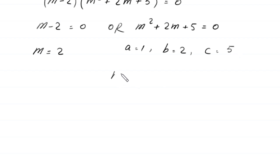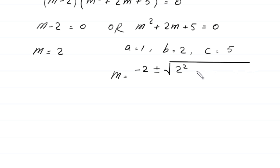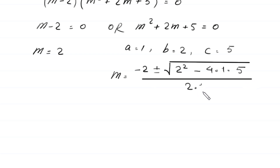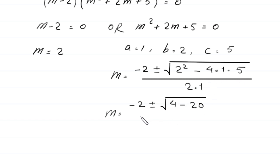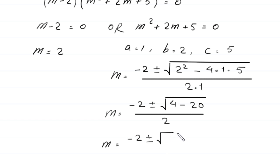According to the quadratic formula, m is equal to negative b plus or minus square root of b squared minus 4ac, divided by 2a. Substituting: m equals negative 2 plus or minus square root of 2 squared minus 4 times 1 times 5, divided by 2 times 1. This simplifies to negative 2 plus or minus square root of 4 minus 20, divided by 2, which is negative 2 plus or minus square root of negative 16, divided by 2.